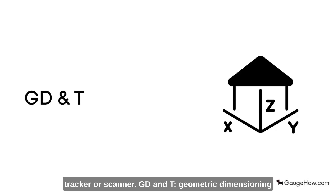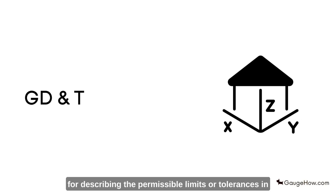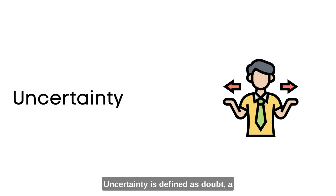GD&T: Geometric dimensioning and tolerancing is a system and symbolic language for describing the permissible limits or tolerances in a part's physical dimensions and measured values.